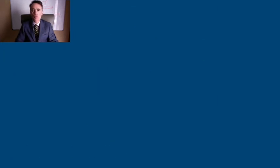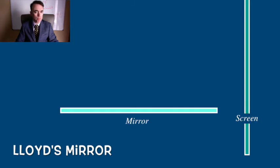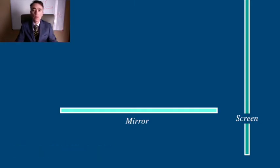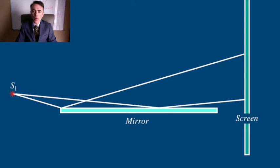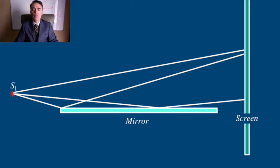Another arrangement to obtain the same interference is with Lloyd's mirror. This is just one mirror and light sent from a point source that is close to the plane of the mirror. At the other side we place the screen, and light will reach the screen from the point source and also reflected off of the mirror.